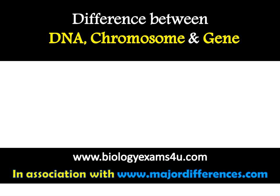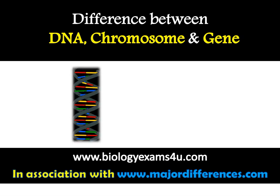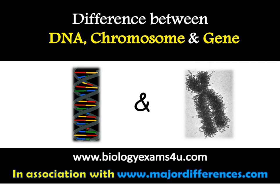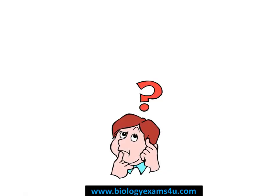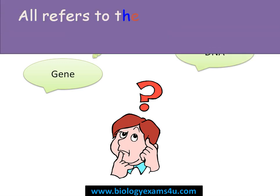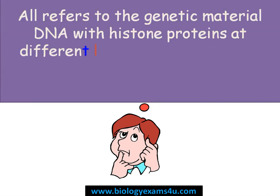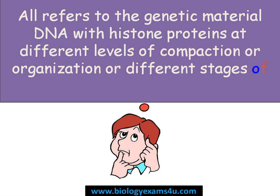Hi friends, welcome to biology exam survey.com. Today the topic of our discussion is the difference between DNA, chromosome, and gene. We might often be confused with these terms. The most important thing is all refers to the genetic material — DNA with histone proteins at different levels of compaction or organization. We call it by different names at different stages of the cell cycle, but all refers to the same thing: the genetic material complexed with histone proteins.